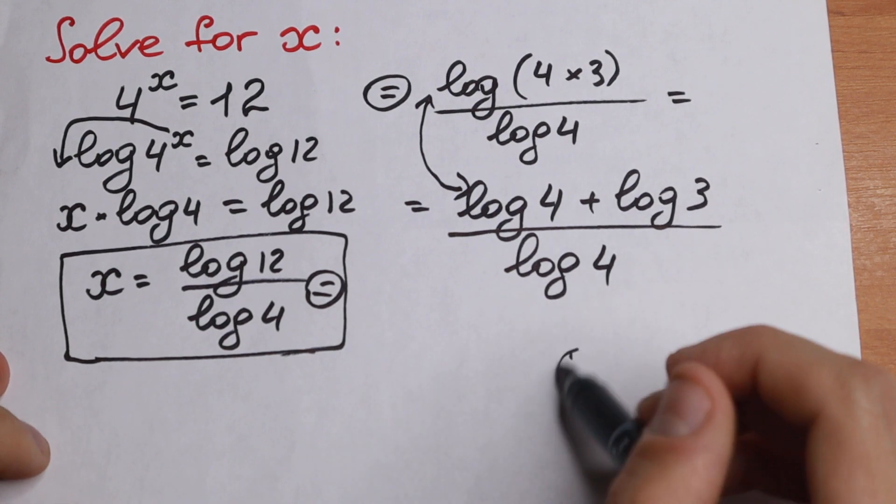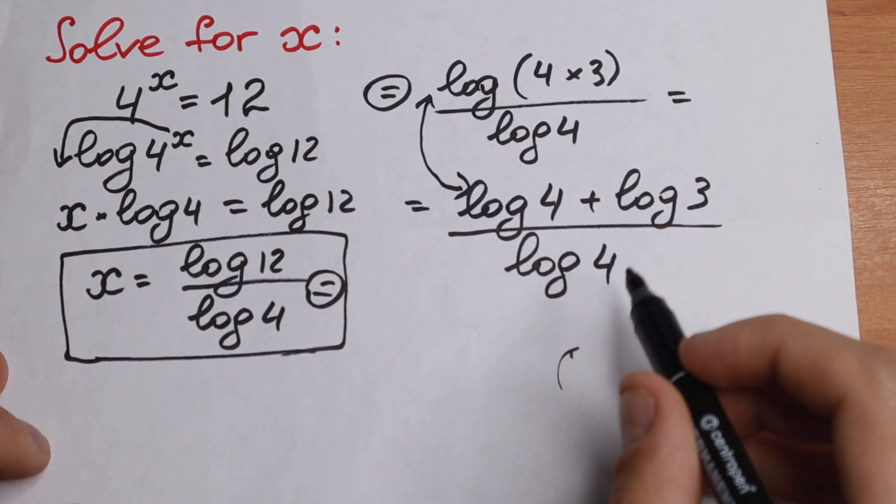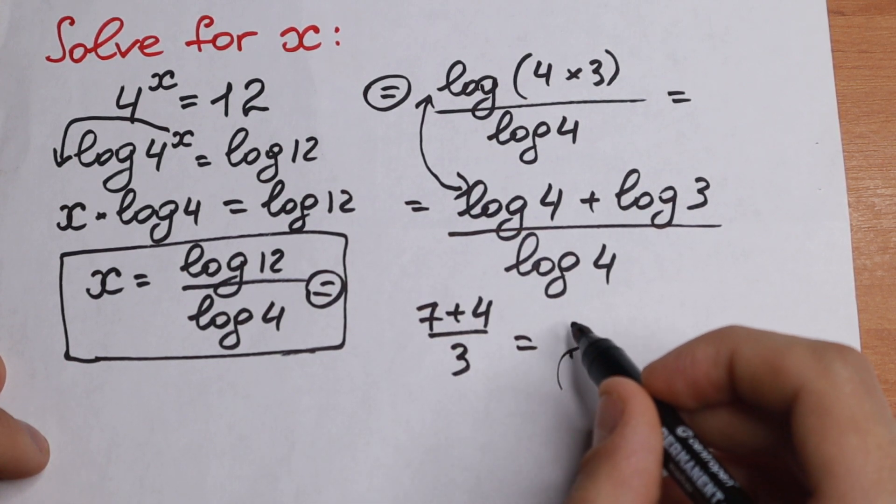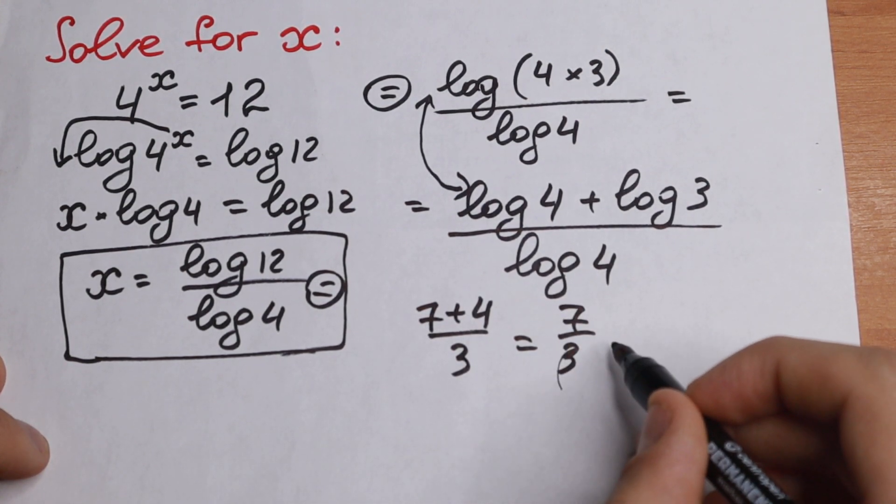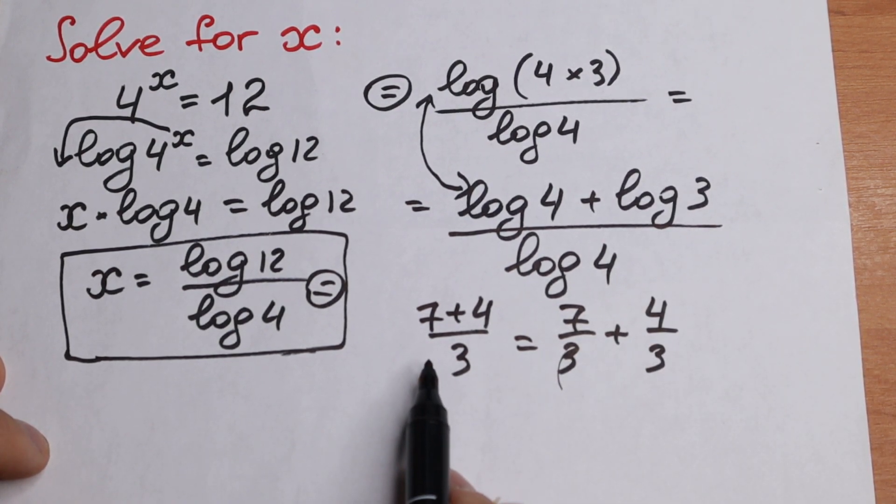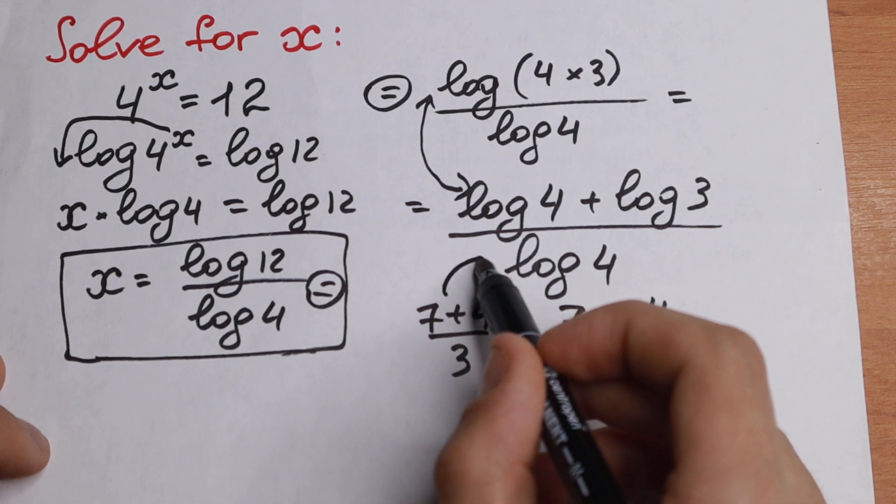Right now we need to know a really good property. For example, if we have 7 plus 4 divided by 3, you can write it as 7 divided by 3 plus 4 divided by 3. And if you add this we will have the same. Why do I write this? Because we have a situation like that.